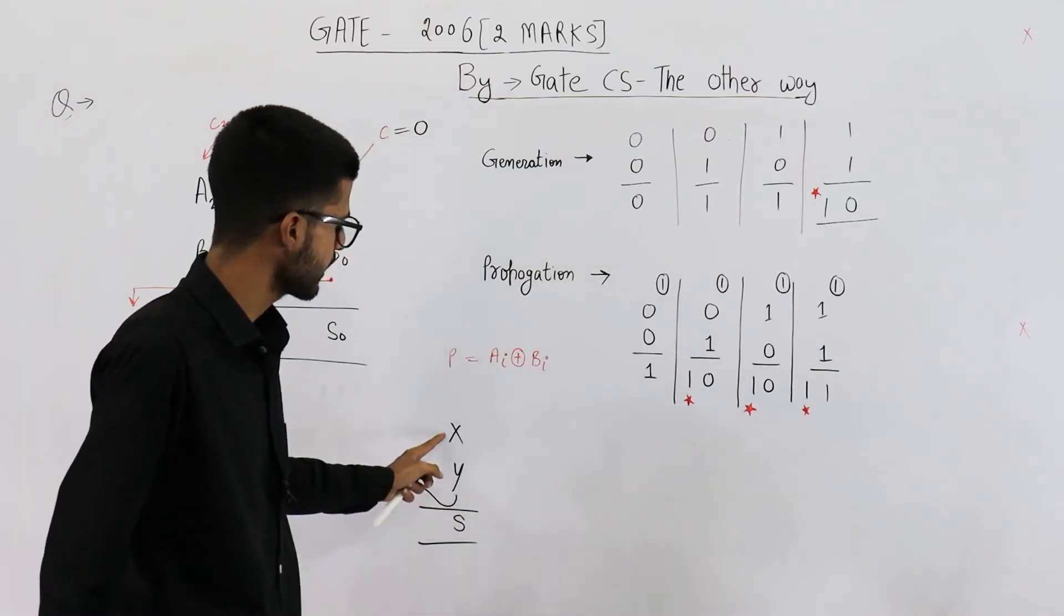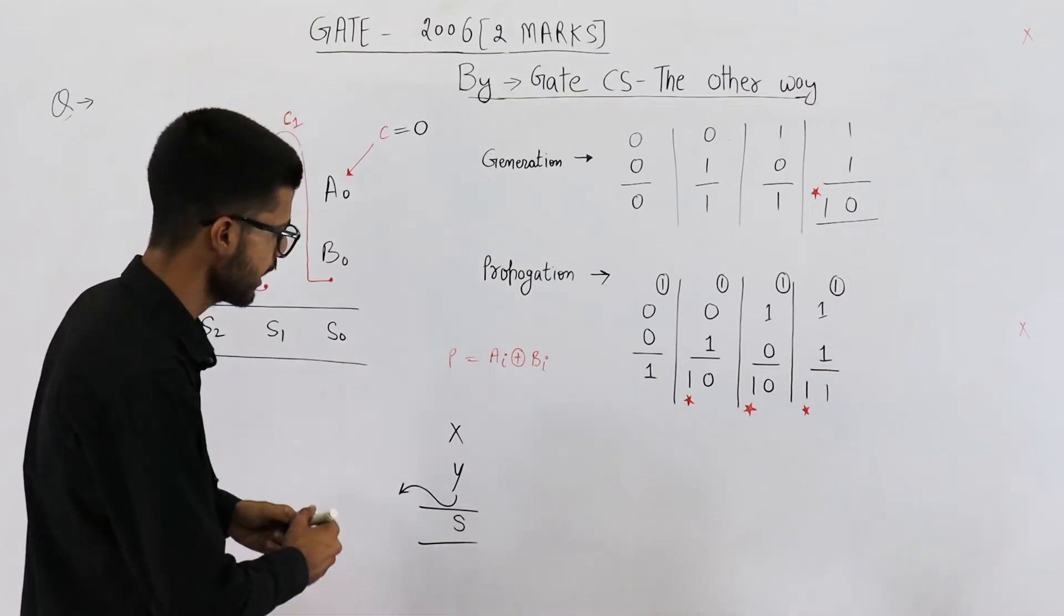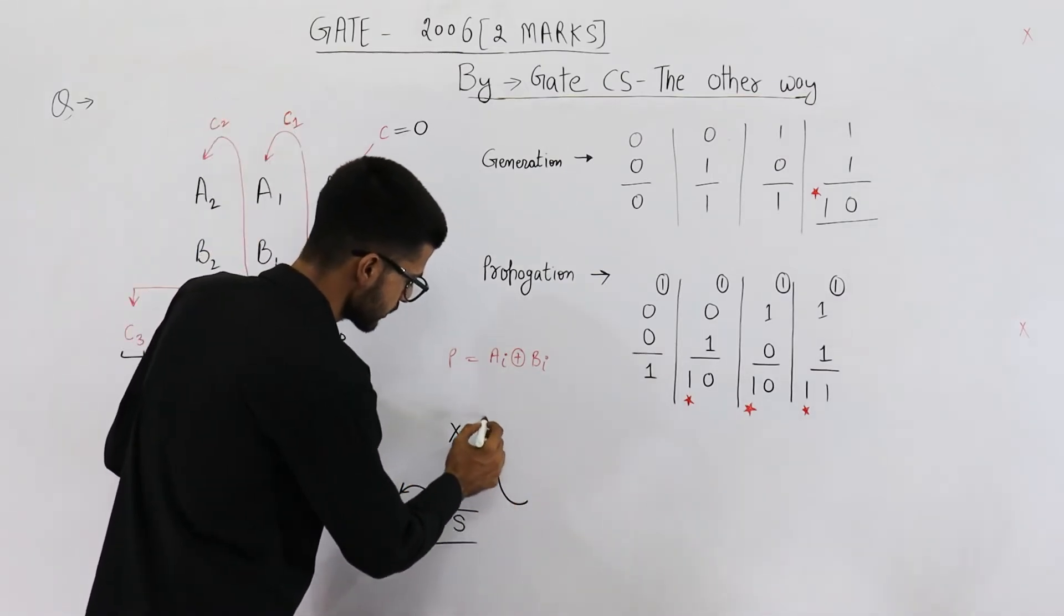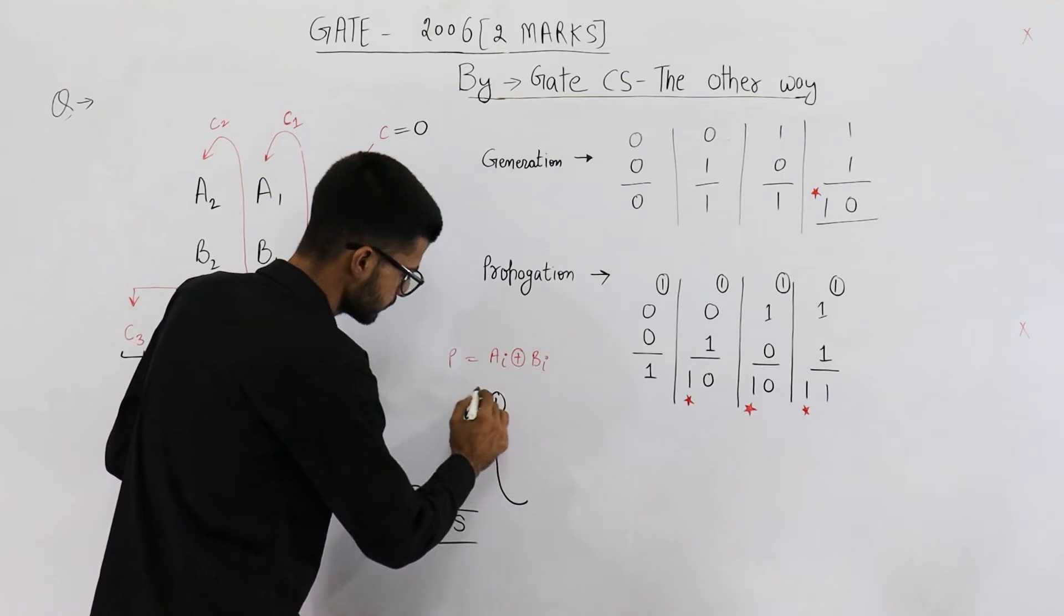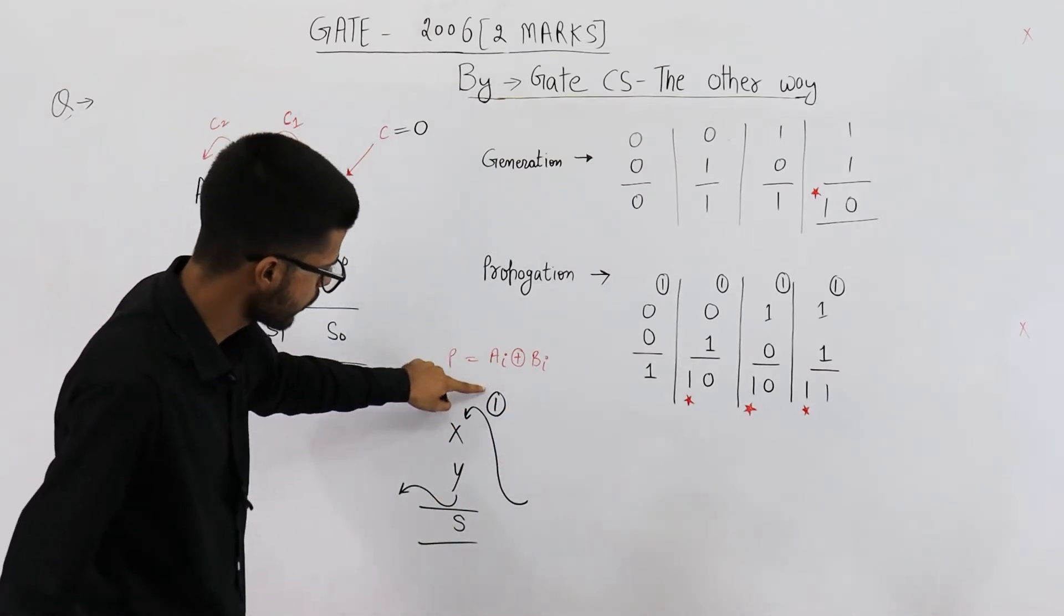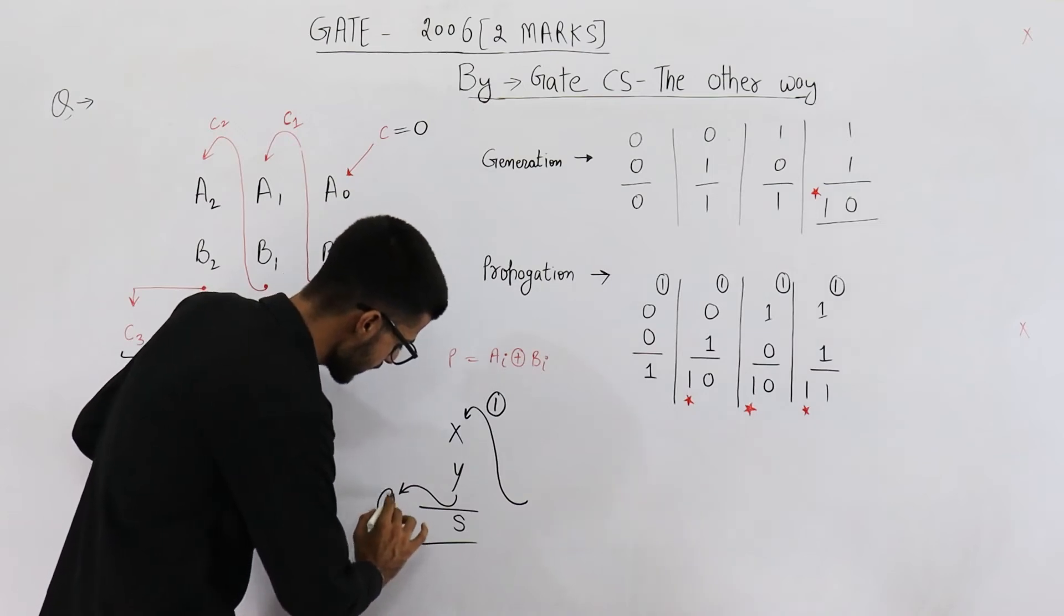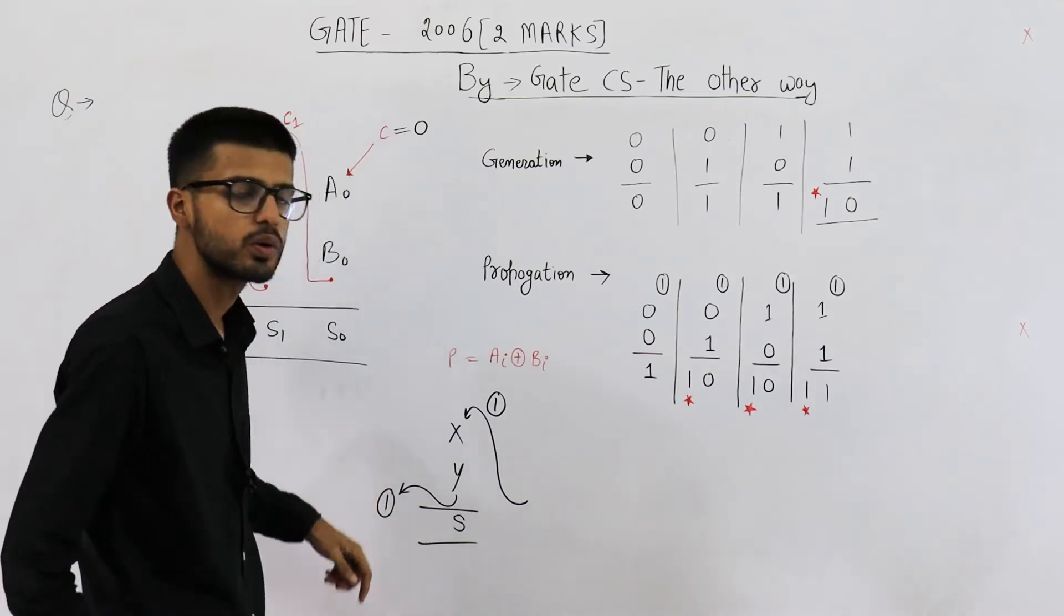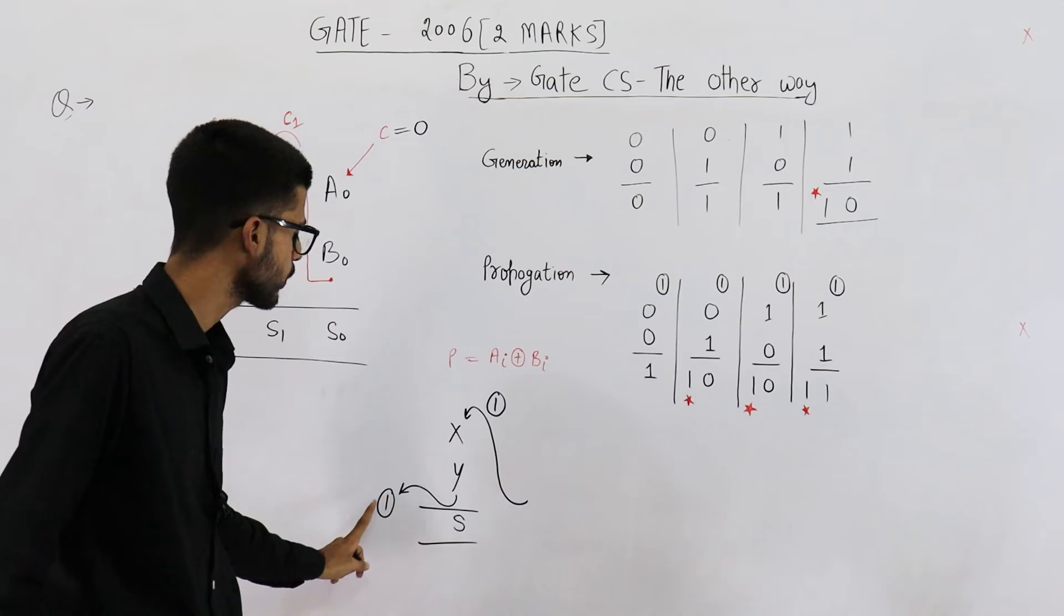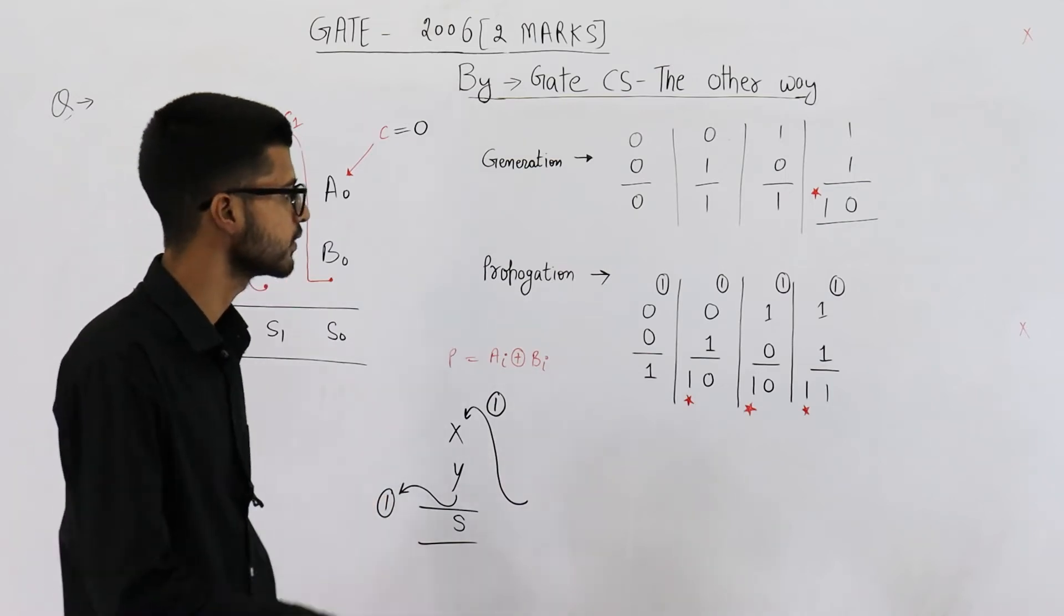Say you are trying to add x and y and the carry from previous stage is 1. Now you will add 1, x and y. If the carry out from this stage is 1, you will say this carry got propagated.